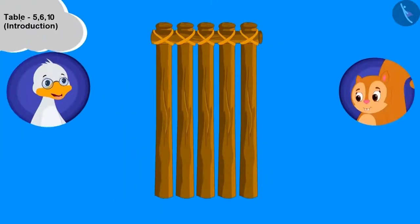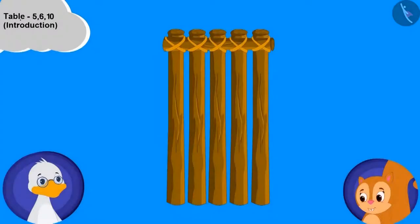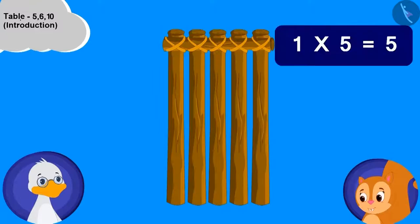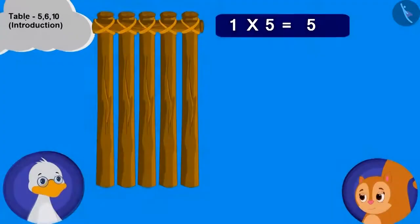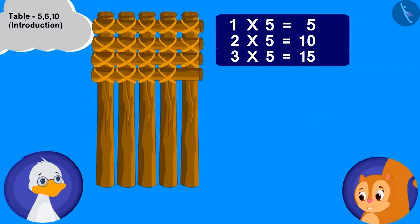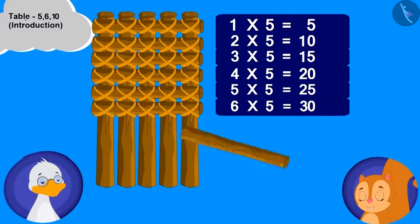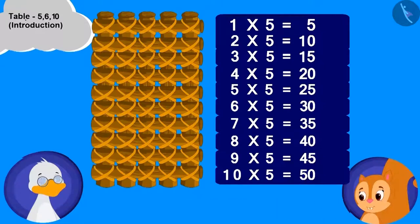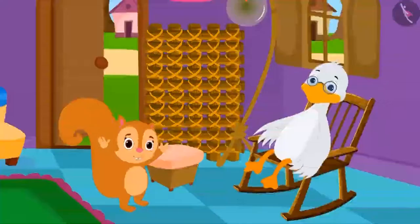This is 1 multiplied with 5. Children, can you count the total joints and tell how many these are? 5. This is very easy. Just keep adding the horizontal woods and keep counting the total joints. Your boat and table both will keep building.